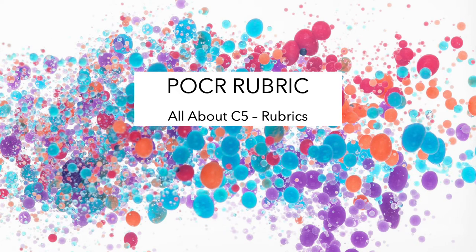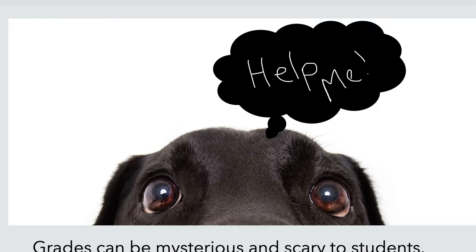This film is about item C5 on the POKER rubric, all about rubrics and grading criteria. Like it or not, grades can be mysterious and scary for your students. In online classes it can be difficult for them to gauge your expectations, what will get them the best grade, and how they go about fulfilling your expectations. Item C5 of the POKER rubric makes certain that you the teacher are doing everything you can to make your expectations clear to your students, so they can do their best work with no worries about their grade or the outcomes.